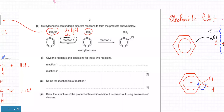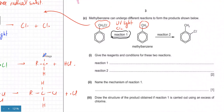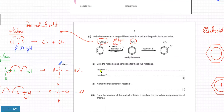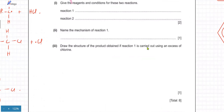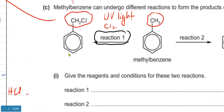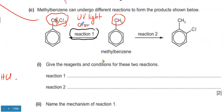We had reached this part where we were supposed to give the reagents and name the mechanism of reaction number one, which we already did — it was a free radical substitution; we did the initiation and propagation steps. This part is already done. You're then asked to draw the structure of the product obtained if reaction one is carried out using an excess of chlorine. If you use too much chlorine, in free radical substitution all the hydrogen atoms get eventually substituted, so this part becomes CCl₃.